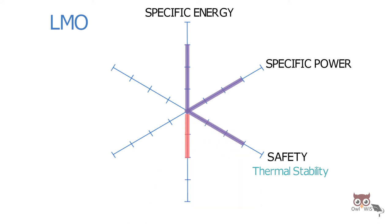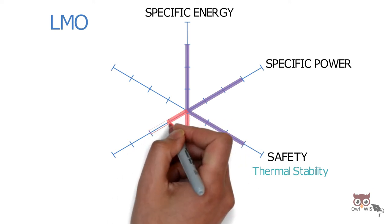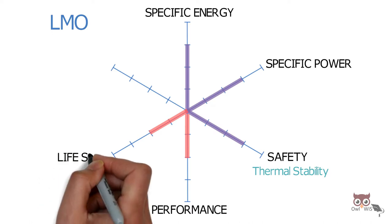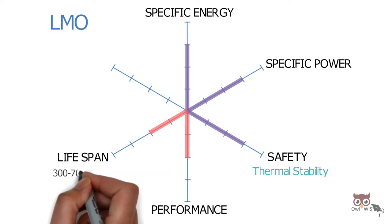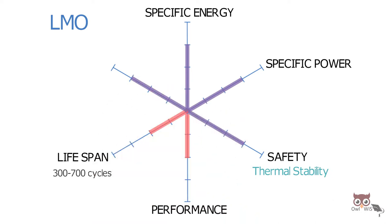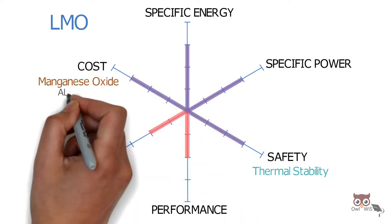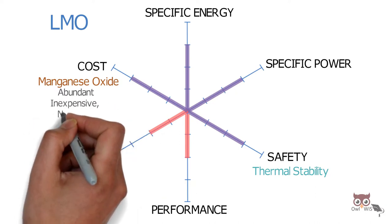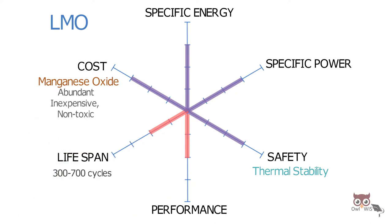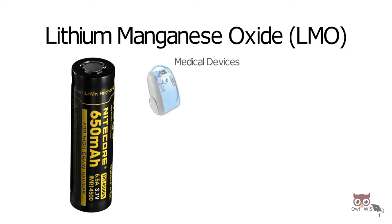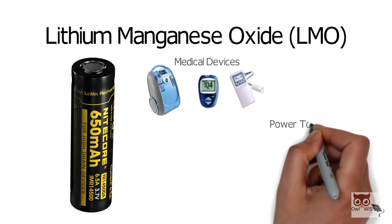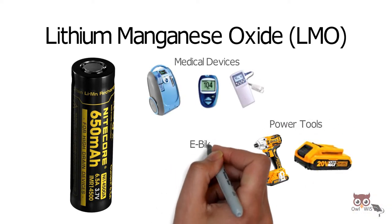It has relatively low performance and a relatively low lifespan of about 300 to 700 cycles. It has an optimum cost as manganese oxide is abundant, inexpensive, and non-toxic. LMO is used in medical devices, power tools, and e-bikes.